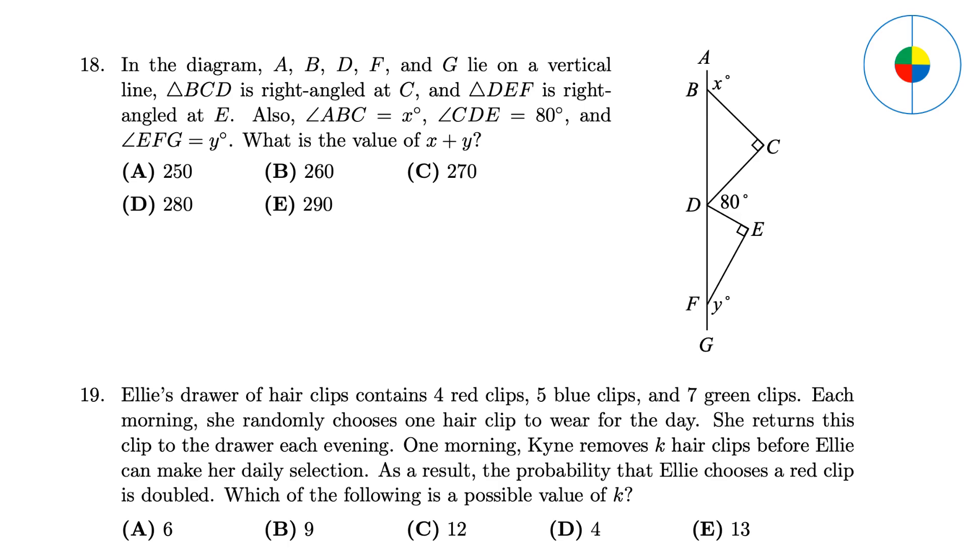Question 19 - This is a guessing game. The current probability of a red clip is 4 divided by 16, which is 25 percent. The new probability is doubled, which will become 50 percent. For 4 red clips, there should be 4 other clips. You need to remove 8 clips, which is not an option. Similarly, 3 red clips is not an option as well. For 2 red clips, you need to remove 10 other clips, plus removed 2 red clips, there will be 12 clips removed. So C is the answer.